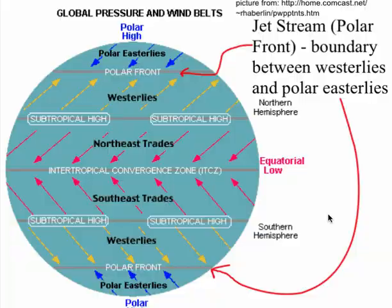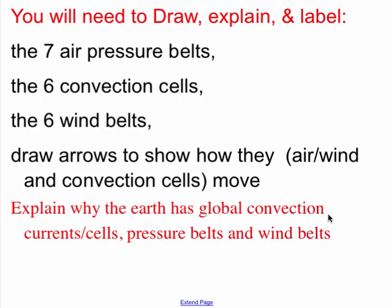This is awesome. In review, you've got to be able to draw, label, and explain all these things — in other words, why the Earth has global convection cells, currents, pressure belts, and wind belts. You can do it. We will practice in class, so bring lots of paper. Love you, have fun, and keep learning.